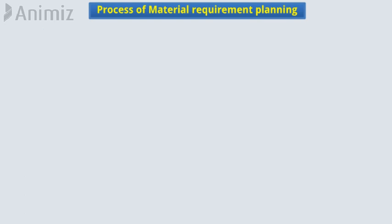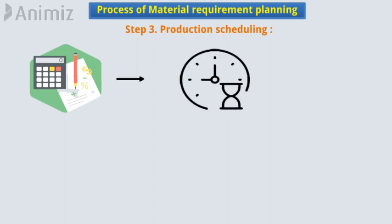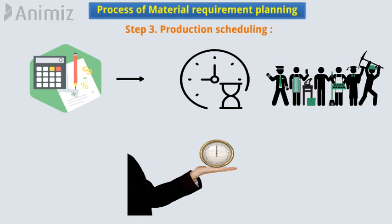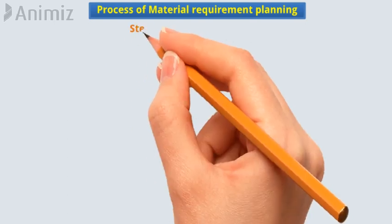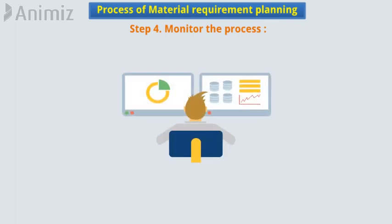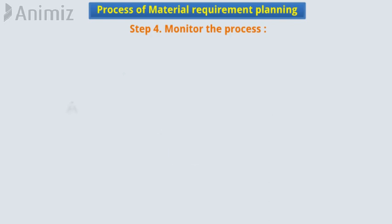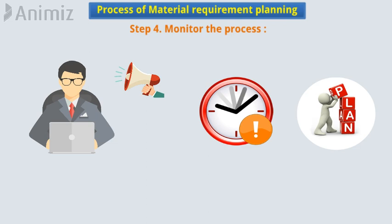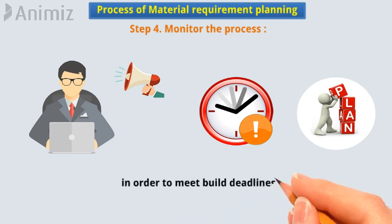Step 3: Production scheduling. The next step in the process is to calculate the time and labor required to complete manufacturing and sets a deadline. Step 4: Monitor the process. The final step is to monitor it for any issues. The MRP can automatically alert managers of any delays and even suggest contingency plans in order to meet build deadlines.